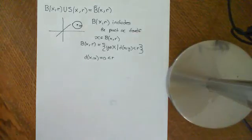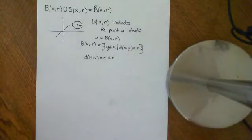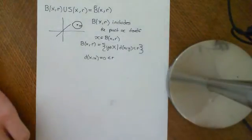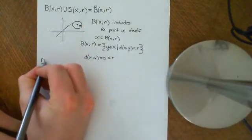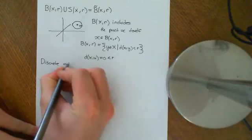In this video we're going to look at examples of open balls, closed balls and spheres in some more abstract metric spaces. The first one we're going to look at is the concept of open balls, closed balls and spheres in discrete metric spaces.